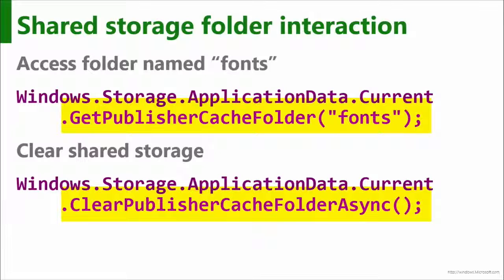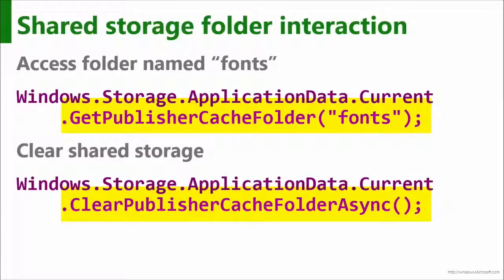You access it with GetPublisherCacheFolder, passing in the subfolder name — for example 'fonts'. That gives you back a StorageFolder object, so you read and write just as if it's in your local storage — no new API needed. To clear it, there's a ClearPublisherCacheFolderAsync method, or you can leave it and the folder will be cleared automatically when the last app from that publisher is uninstalled from the device.